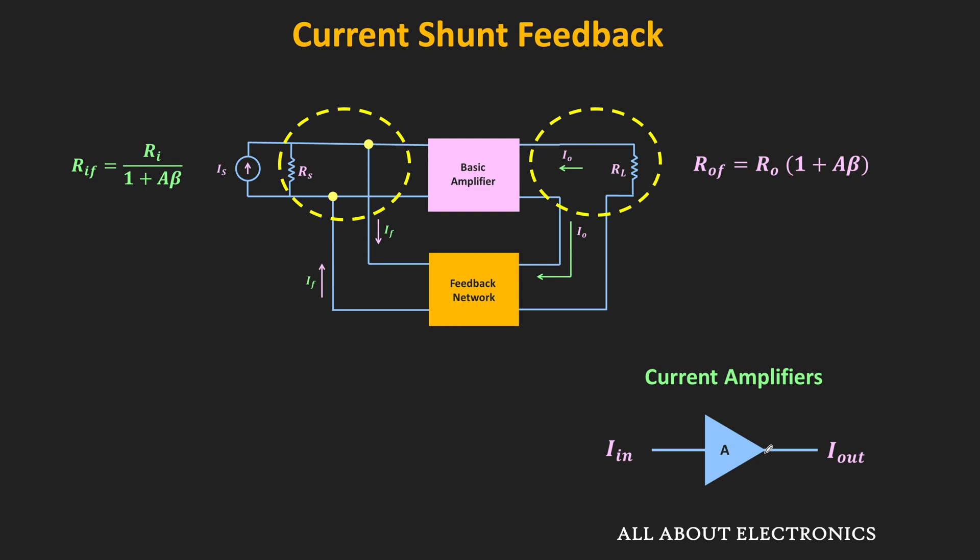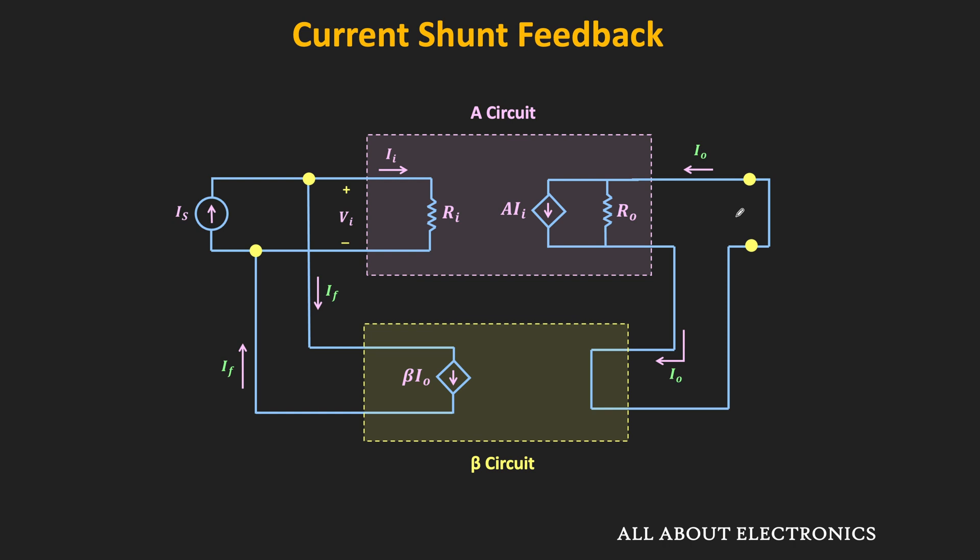So now let us understand, in this feedback topology, how the input impedance reduces and how the output impedance increases, and let us also understand how we got these expressions. This is the general structure of the current shunt feedback amplifier. Here, this A circuit is the basic current amplifier, while this β circuit is the feedback network.